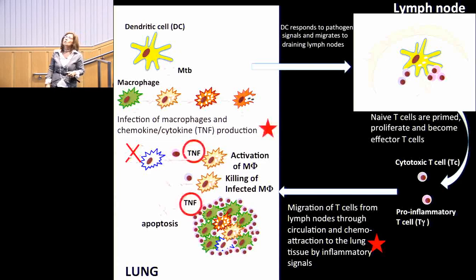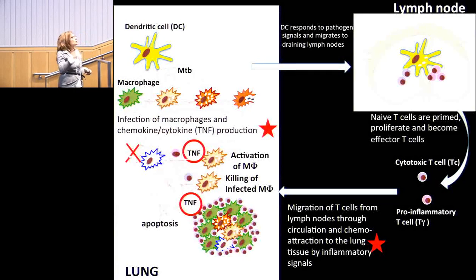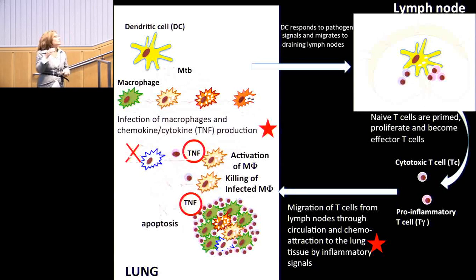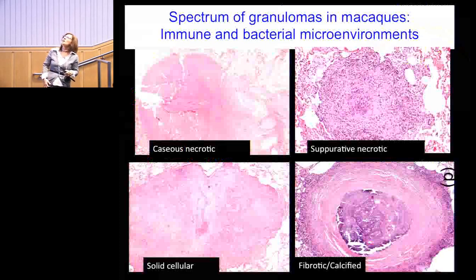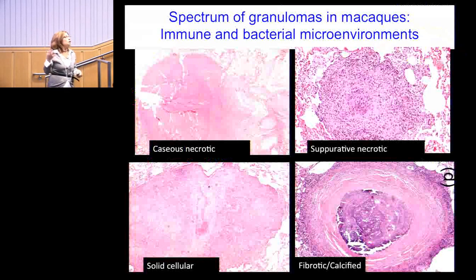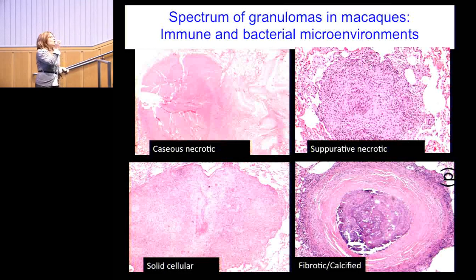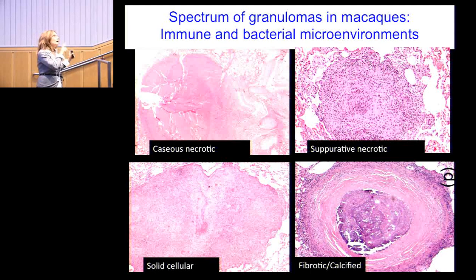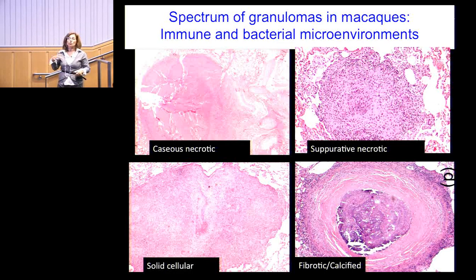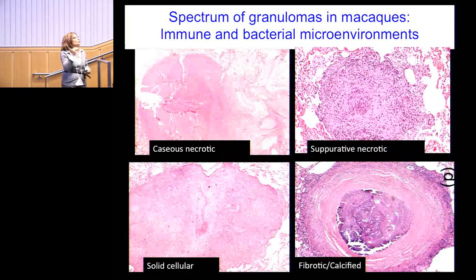Jennifer and I have developed a multi-scale approach: when we learn that certain elements are really important in the system, we further explore those elements in our modeling. These histopathology pictures show what granulomas look like — there are millions of examples and almost no two are alike. Even within a person who has active or latent disease, these granulomas look very different. You can have good and bad granulomas in the same individual, both ones controlling bacteria and ones that are not.